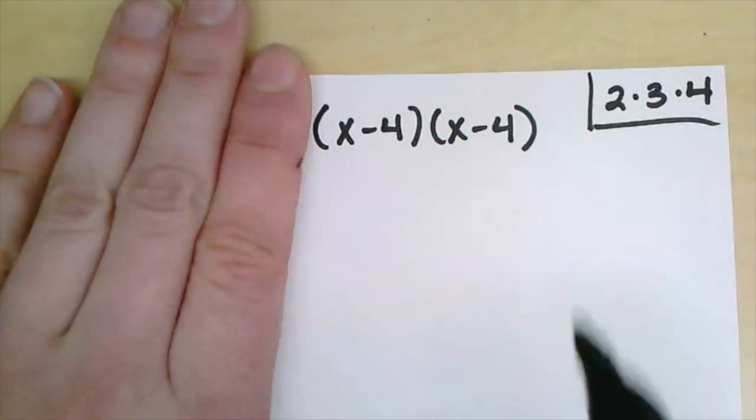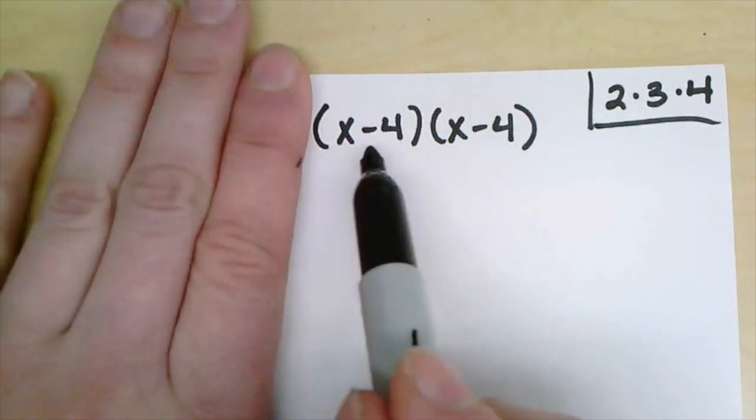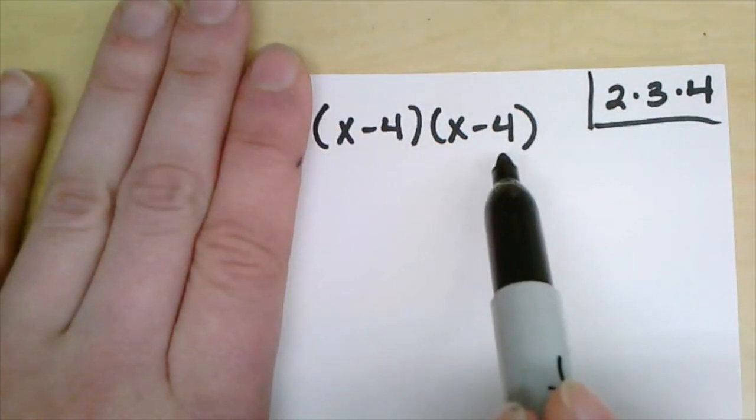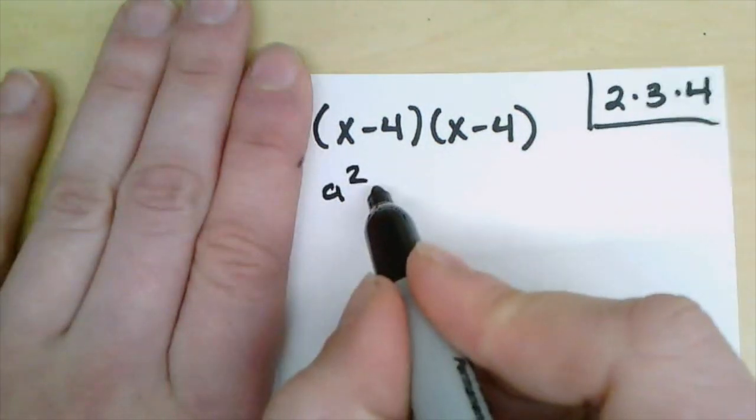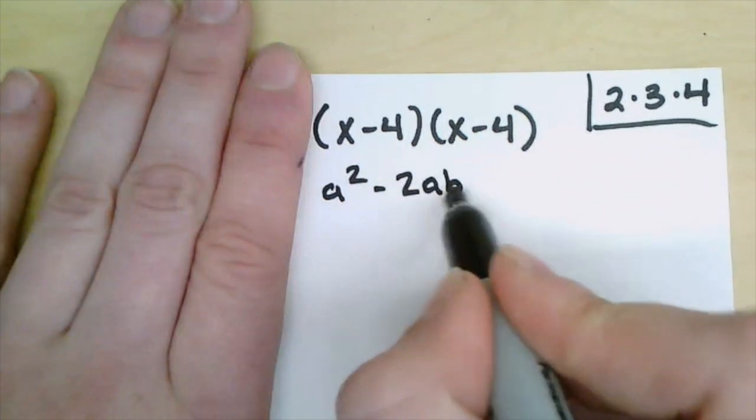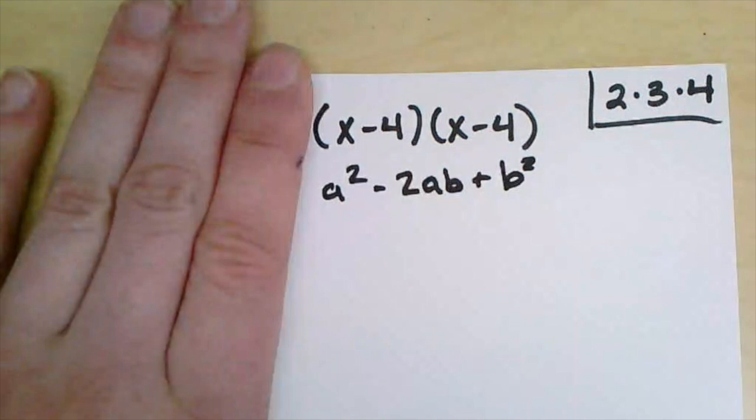I could use the box method, I could use the FOIL method. Or in this case I recognize that x minus 4 is the same thing as x minus 4, so I can use the squares of differences pattern which states that a squared minus 2ab plus b squared will be the same thing as this.